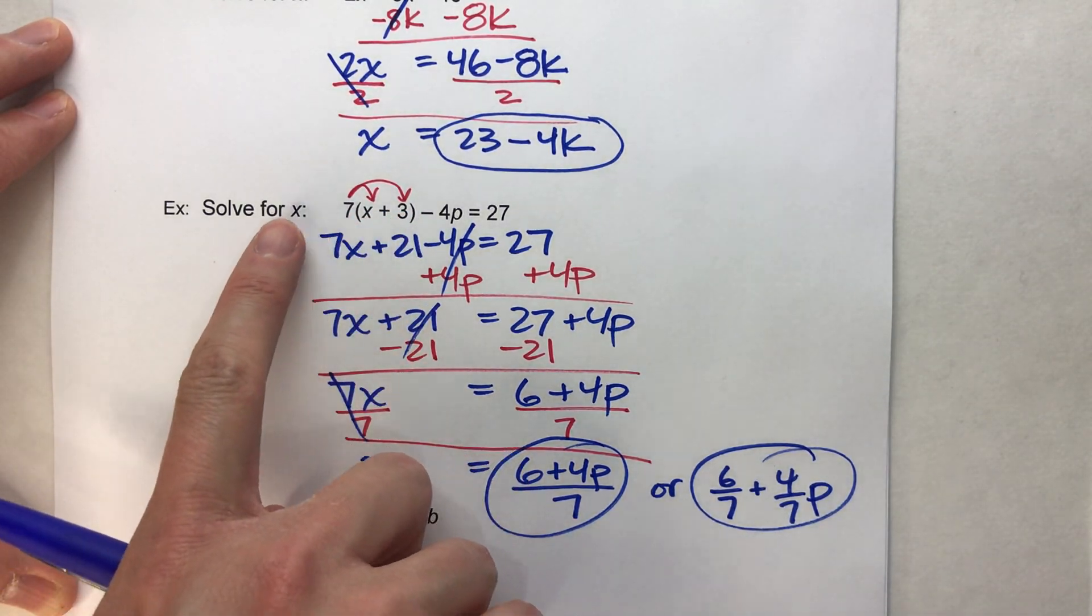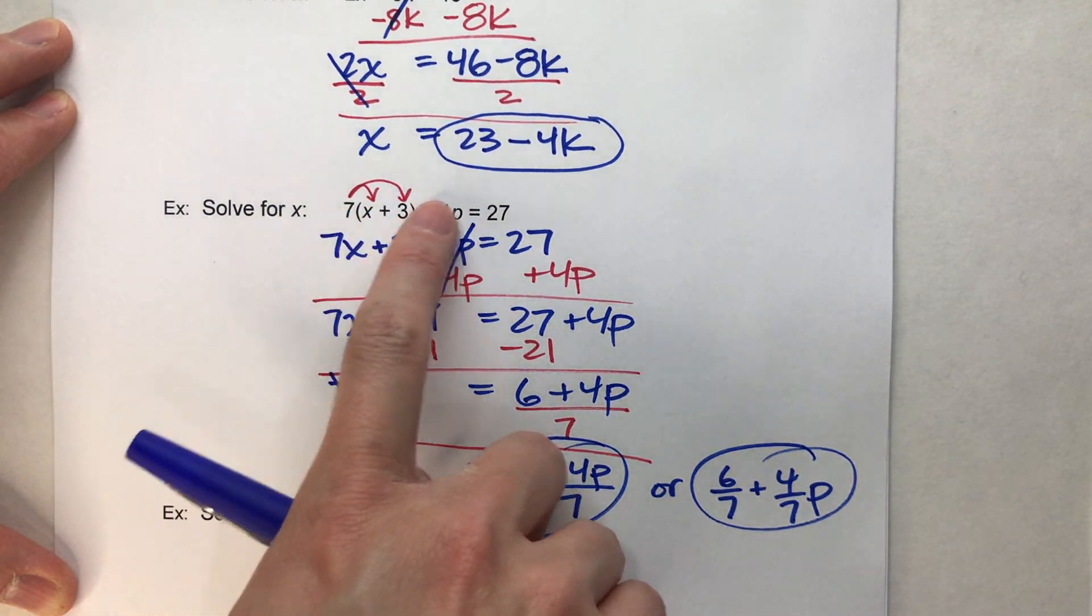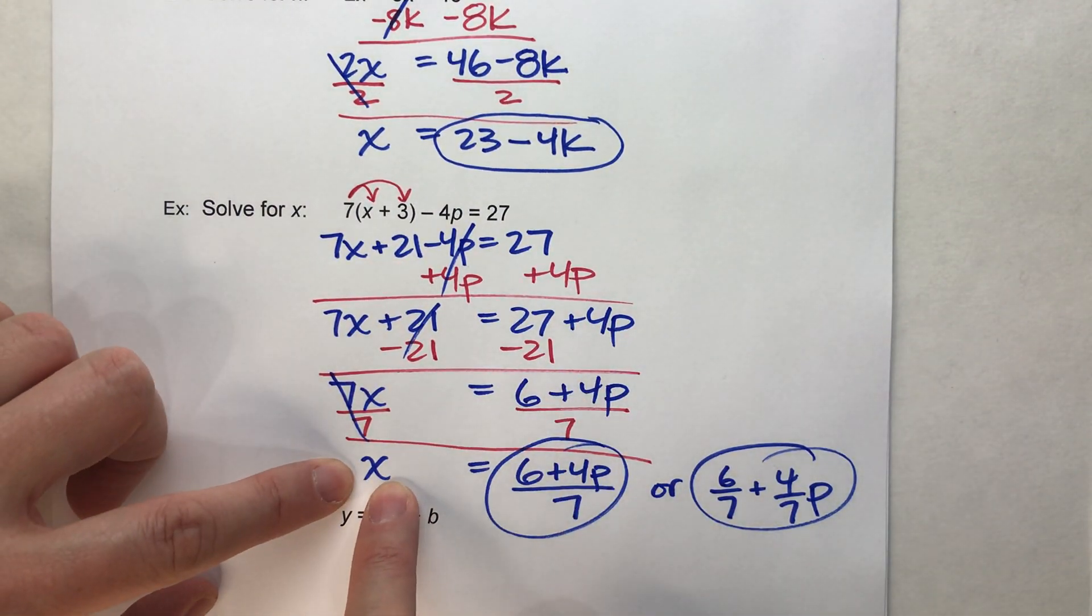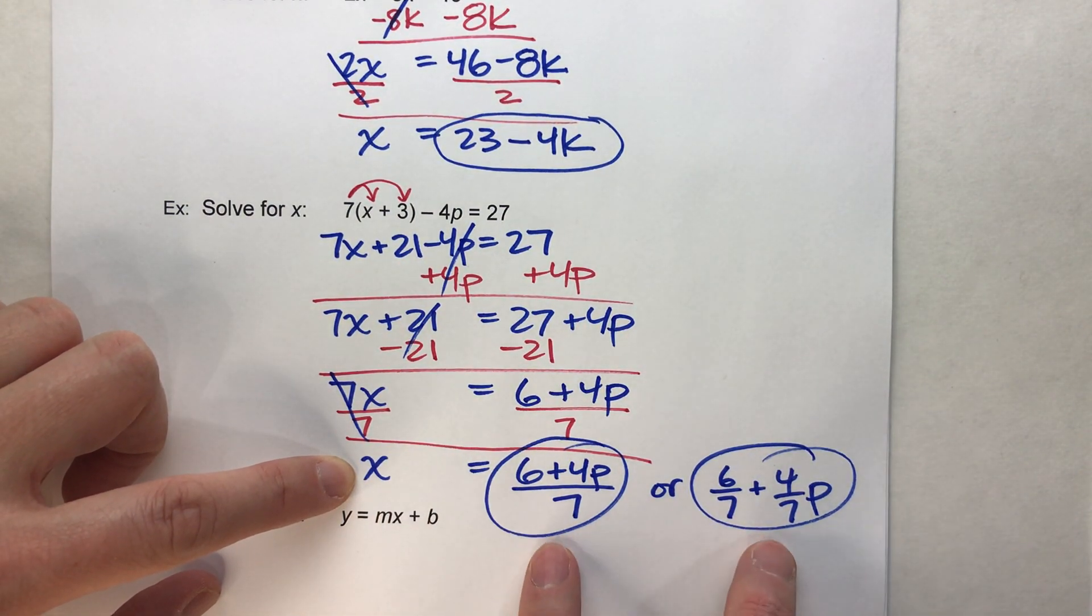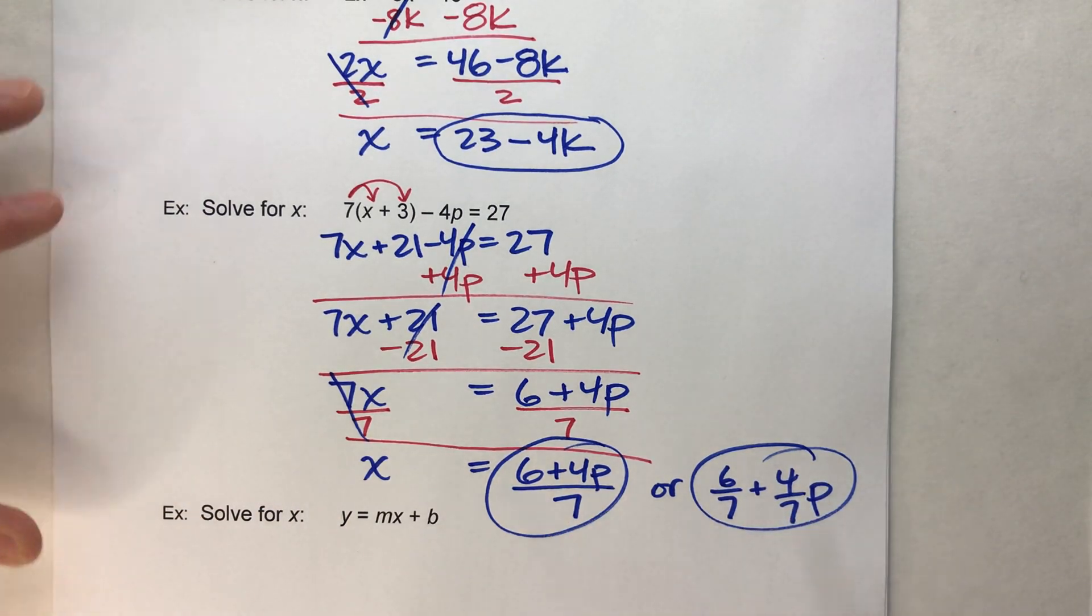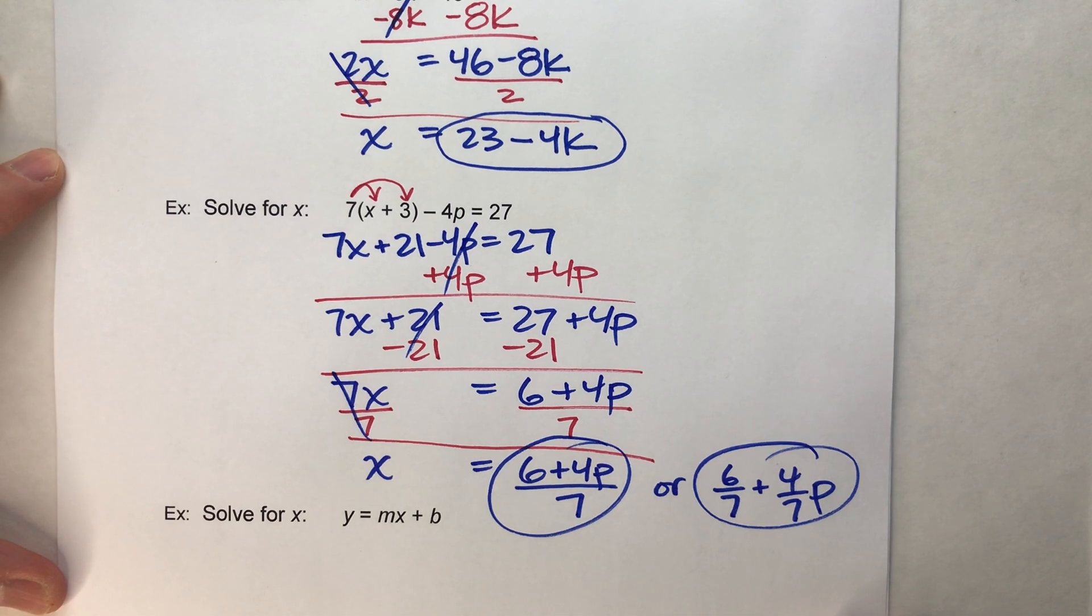But notice, again, we had to get x by itself, we simplified our side, got everything to the right side, and x alone on the left side. And, either one of these would be fine for your answer for x.